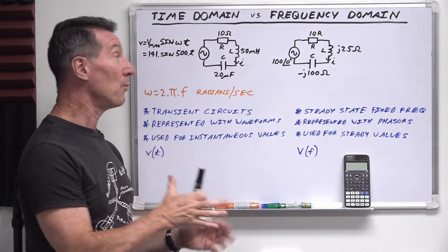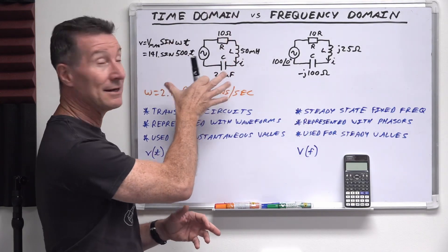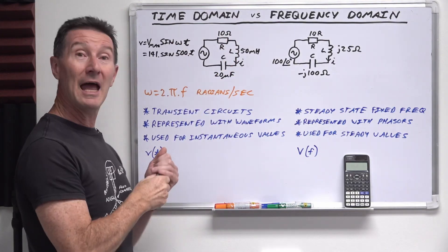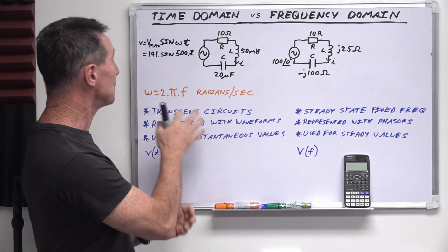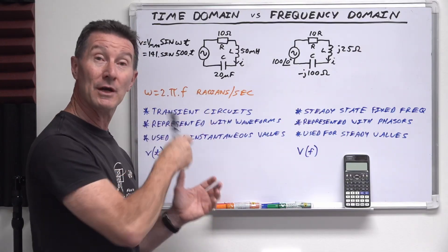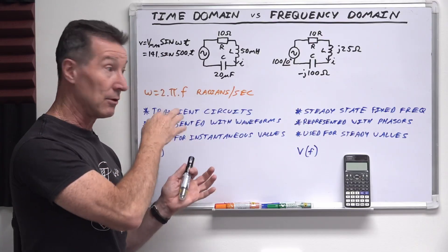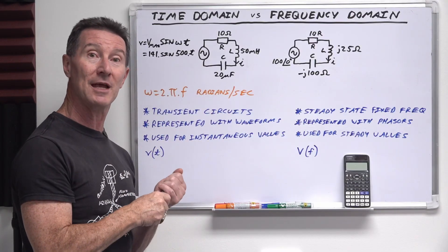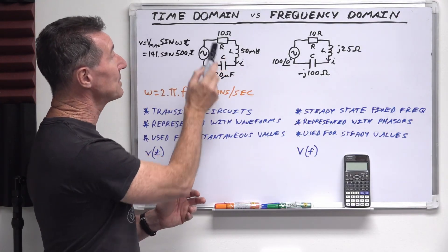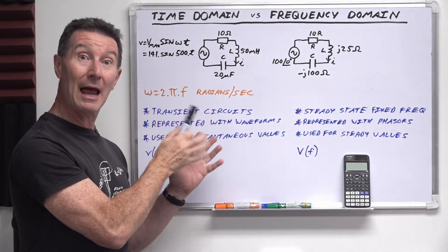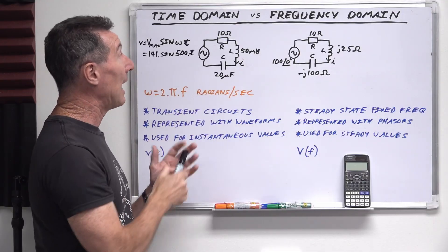Similar to how your oscilloscope works, think of time domain AC circuit analysis as working on instantaneous values. And so you can use these on circuits that are transient circuits, for example. You'll see that in the time domain, the circuit elements are represented as their actual LC and R values.